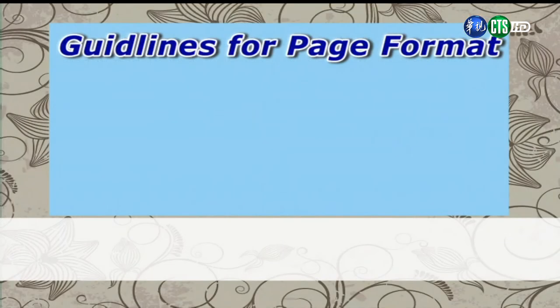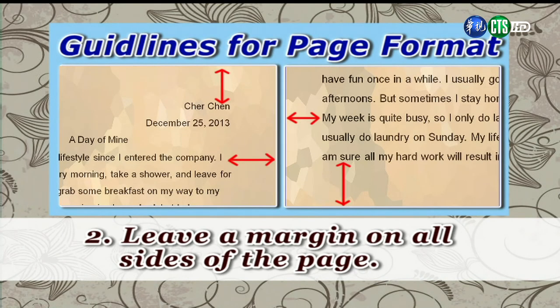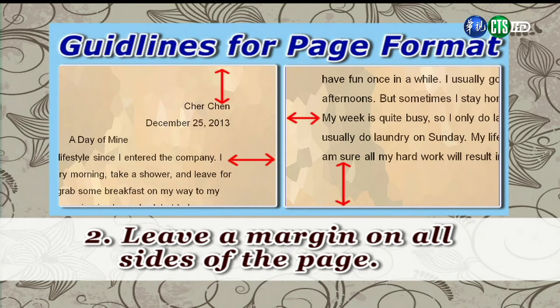Alright, the second thing to pay attention to is that you should leave margins on all sides of the page. 好，那接下來要注意到的事情呢，是文章列印出來的紙張，它的四個邊邊，都要留下一個空白的邊框。 Alright, and so you should leave about one inch or about two and a half centimeters of blank space on the top, bottom and sides of each page that you write. 好，所謂合適的這個邊框呢，大概是上下左右各至少要留大概一寸的距離，也就是大概2.5公分的空白。 Alright, so we have a lot more tips, but we're going to take a break right now and we'll come back with more about page formatting after the break.